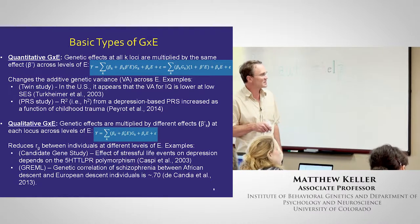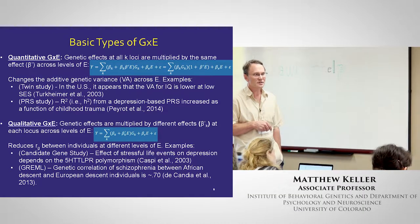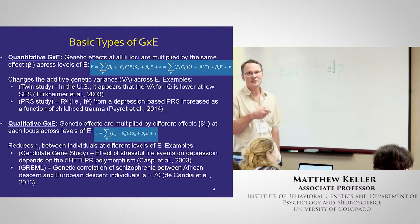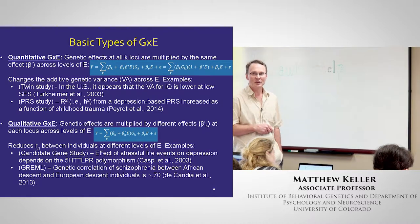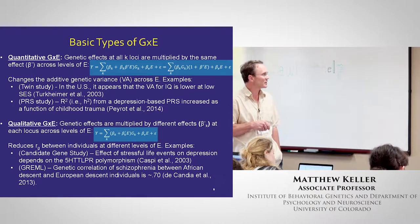Usually qualitative G×E is modeled at particular loci. The most famous G×E study — probably with around 7,000 citations — was published in 2003 by Caspi et al., finding that the effects of stressful life events on depression depend on the 5-HTT-LPR polymorphism. Whenever you see the word 'depend,' it's usually talking about an interaction. We'll use this example a lot in this talk. You can also look at this genome-wide using what's called a GWIS study — a genome-wide interaction study.